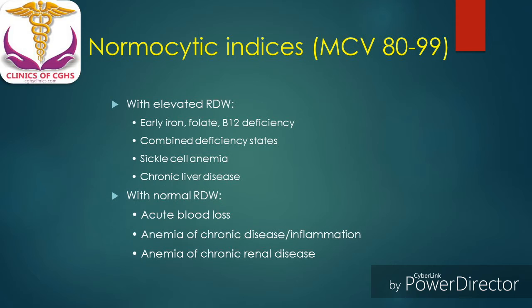For normocytic indices, that is MCV value between 80 to 99, further categorization is based on RDW value. With elevated RDW and normocytic indices, it can be observed in early iron deficiency, folate or B12 deficiency states, combined deficiency states, sickle cell anemia, and chronic liver diseases. With normal RDW and normocytic indices, it can be observed in acute blood loss, anemia of chronic diseases, or anemia of chronic renal disease.